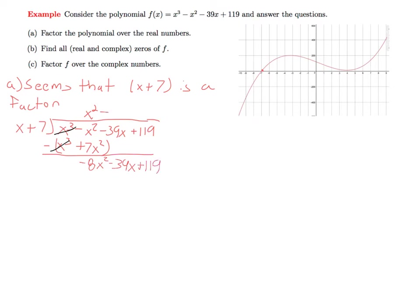Now we need to multiply by minus 8x. That would give us minus 8x squared minus 56x. And now we subtract this, and again the leading terms cancel.